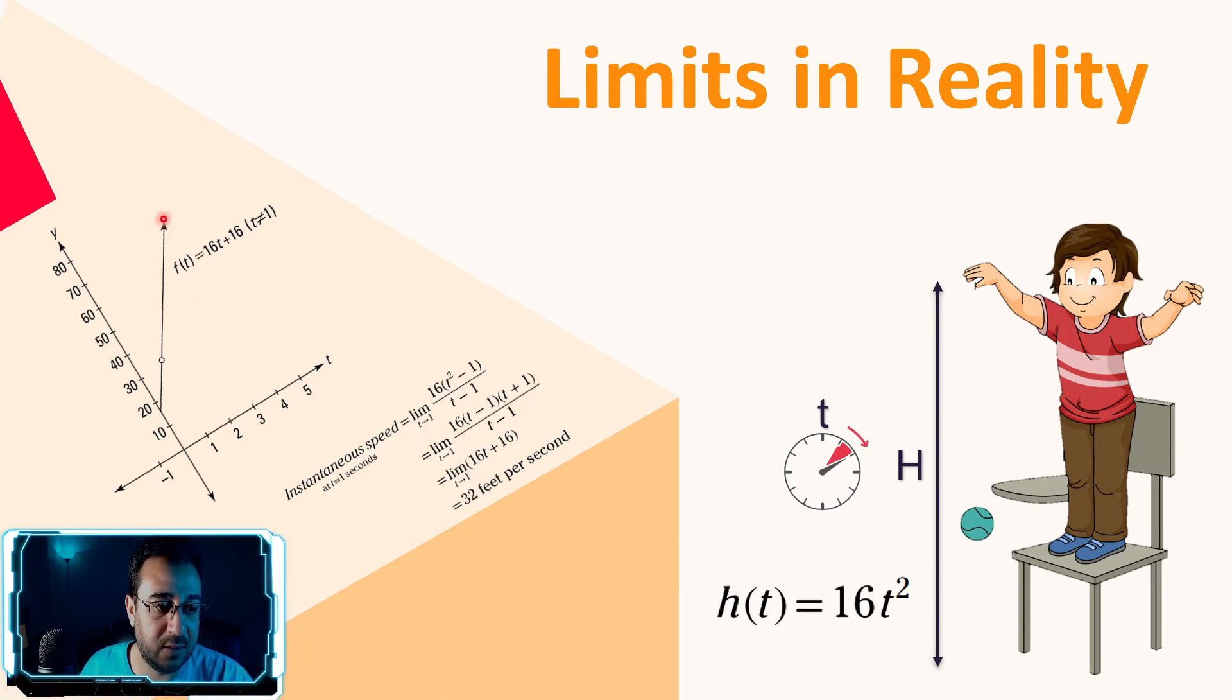Now to find the instantaneous speed we can easily apply the limit for that function. The instantaneous speed at time equal one second, we can see the limit of the f(t) as t approaches to one, which is as the time approaches to one second. Then the limit of 16t plus 16 can be represented as 16 multiplied by t squared minus one over t minus one, which is a different way to represent that function. If you plug in the one for that function instead of each t you see in the equation, then you can see the instantaneous speed for the ball at second one was 32 feet per second.